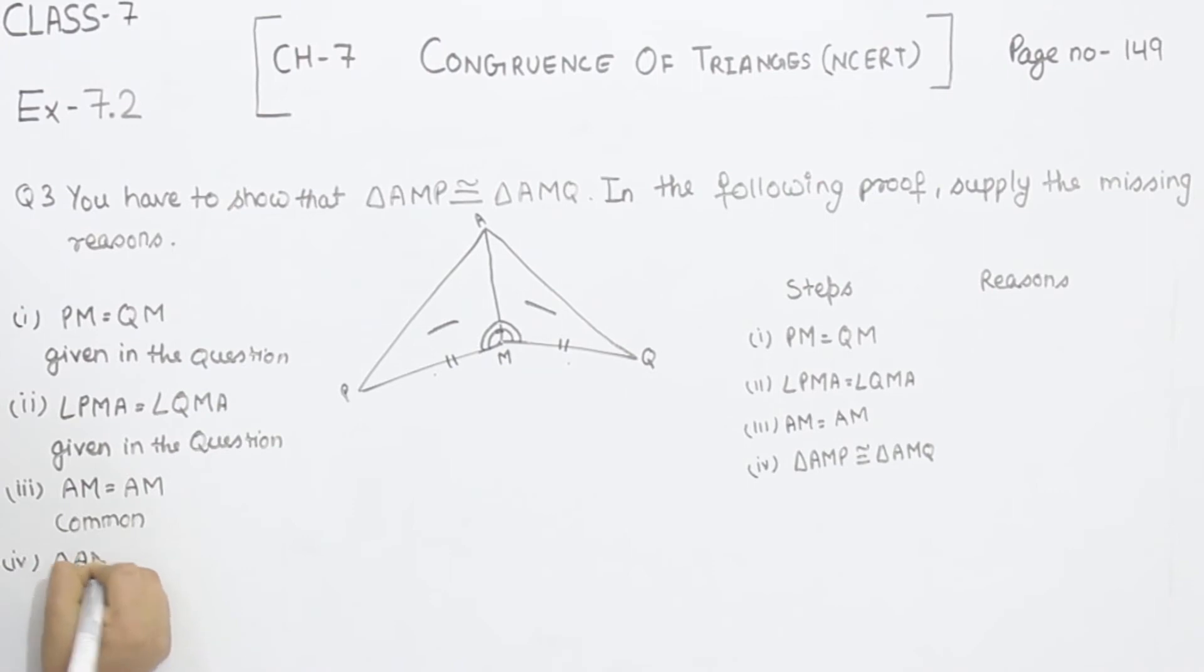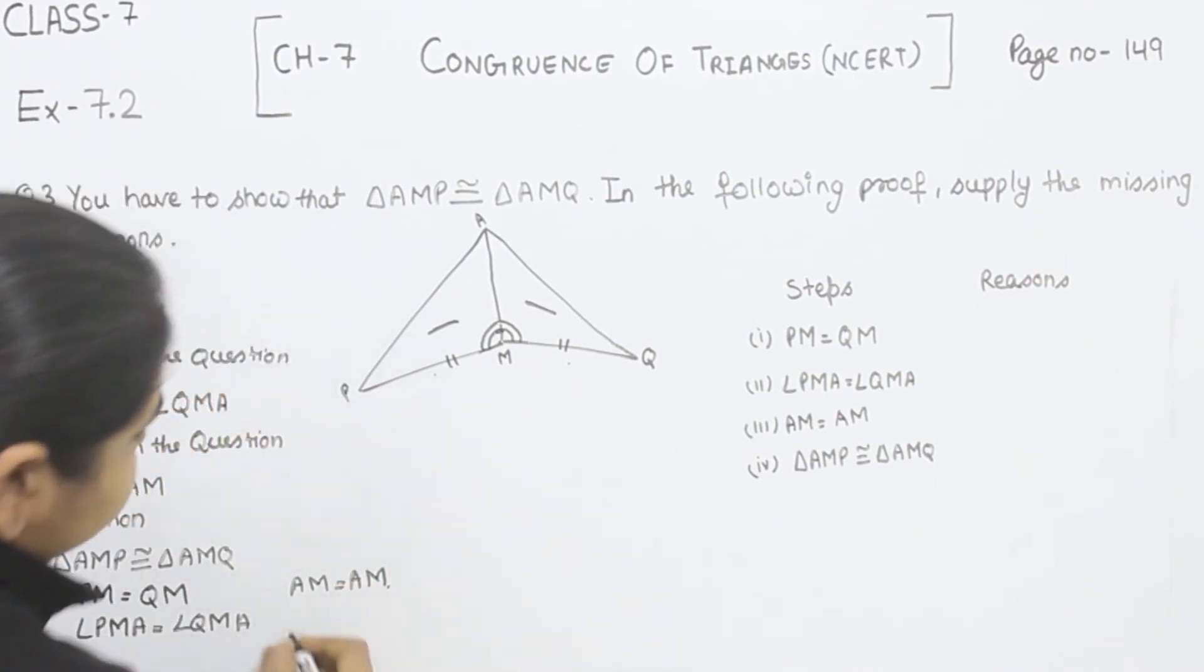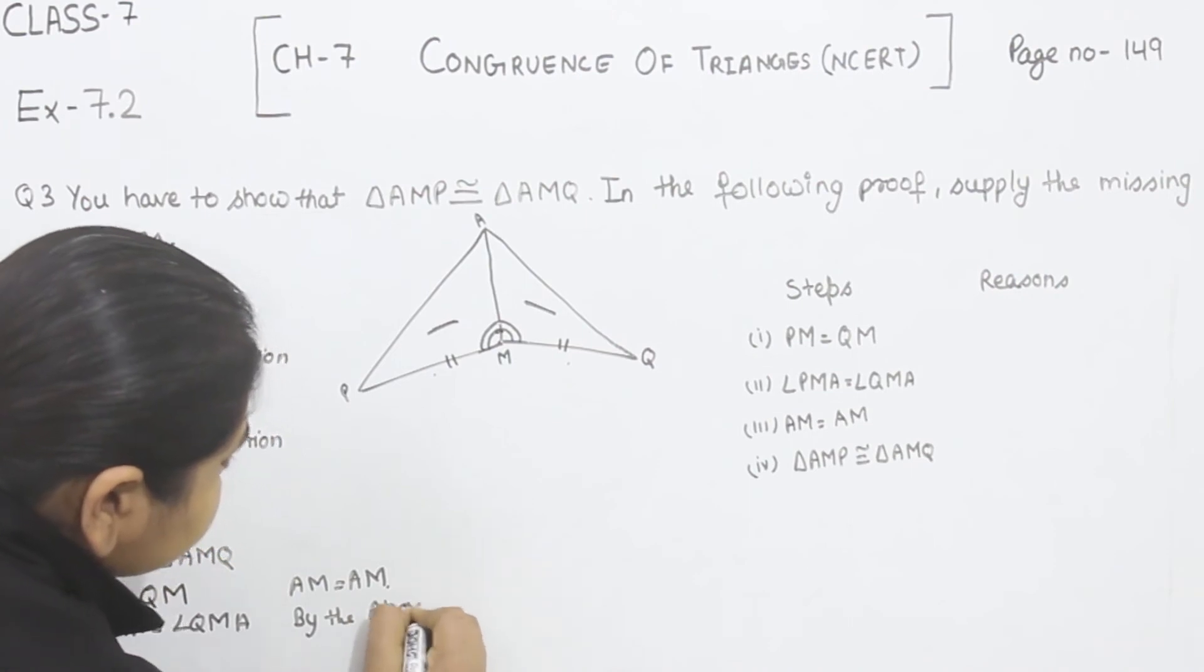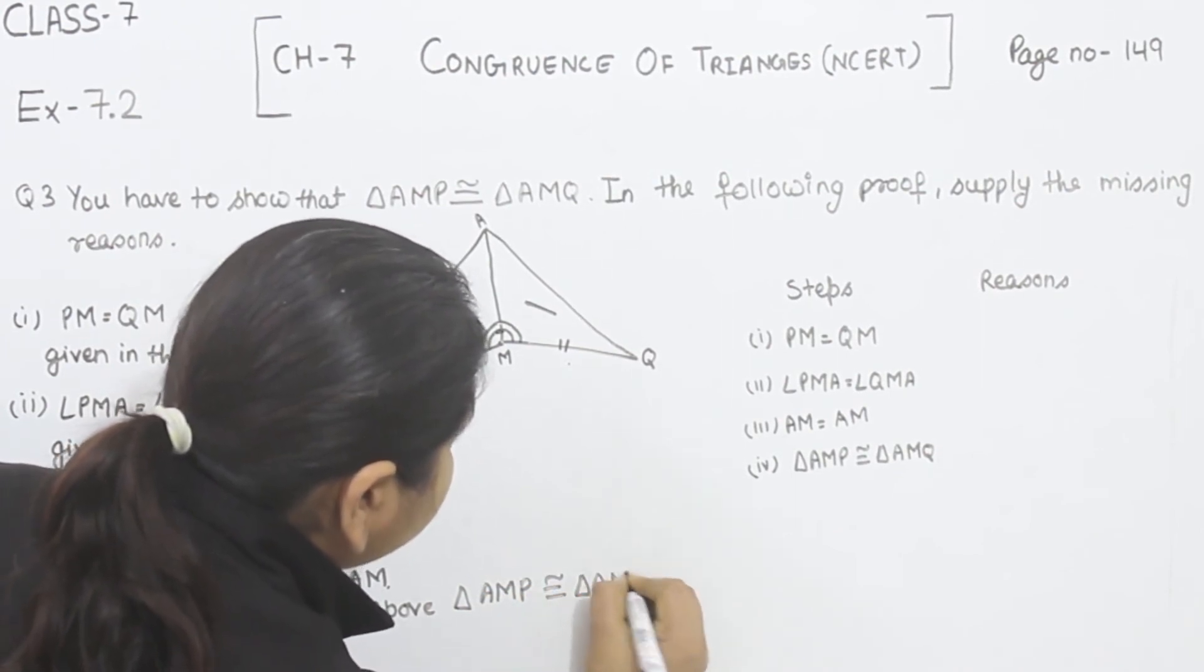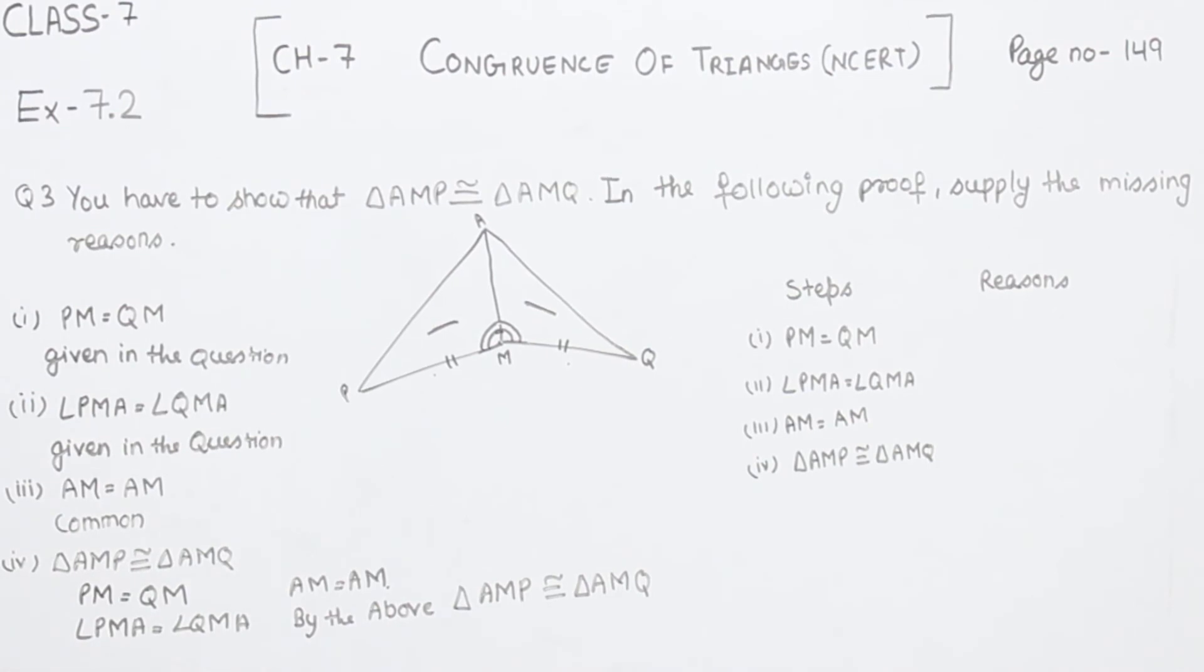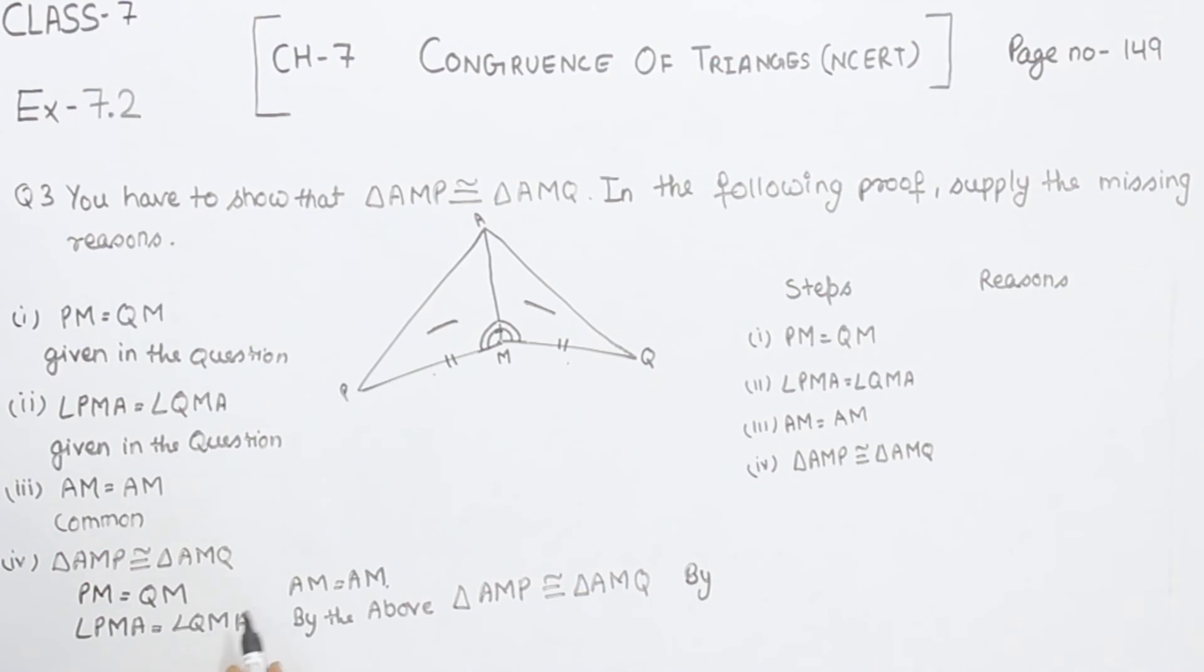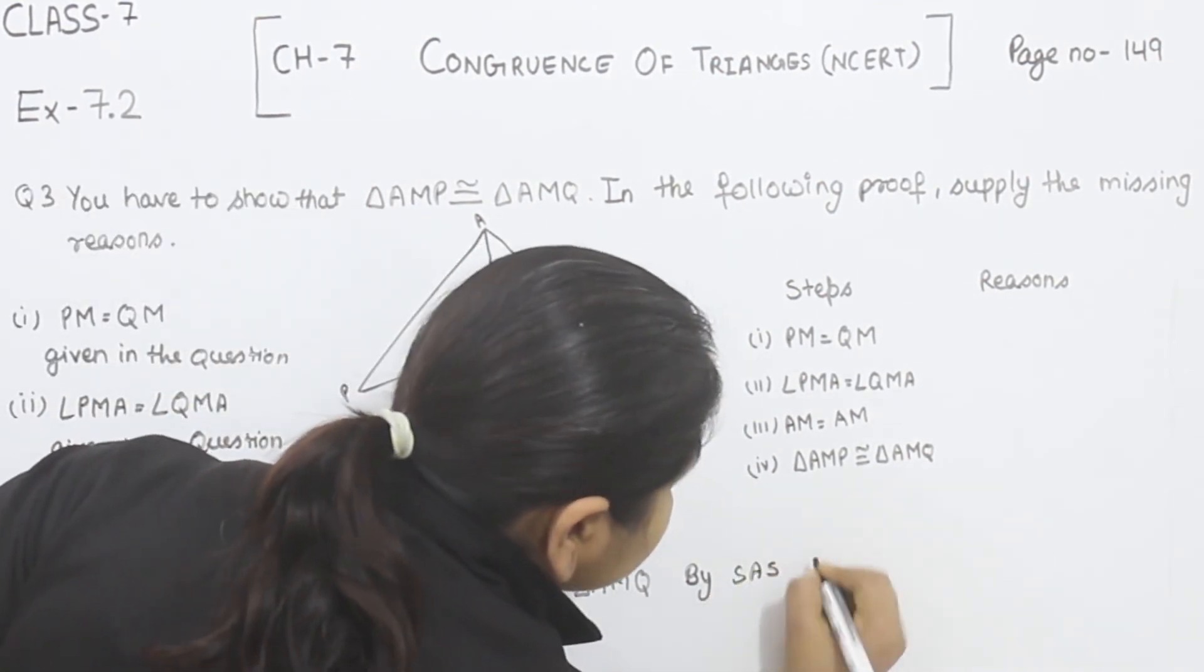Now comes to the fifth one. Triangle AMP is congruent to triangle AMQ. Why are they congruent to each other? Because we are having one angle and two sides as equal. So PM is equal to QM, and angle PMA is equal to angle QMA, and AM is equal to AM. So by the above, triangle AMP is congruent to triangle AMQ. Now we are having two triangles congruent to each other. By which property? Side angle side.